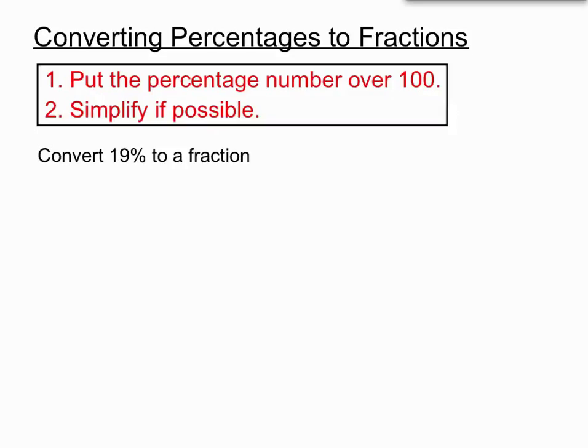Looking at our first example, we're asked to convert 19% to a fraction. Step 1: we'll put that 19 over 100 and look to simplify if we can. Now for simplifying, we're asking ourselves: are there any numbers other than 1 that can go into 19 and 100? We'd look to divide the top and bottom by the same number. In this case, 19 over 100 is the simplest answer.